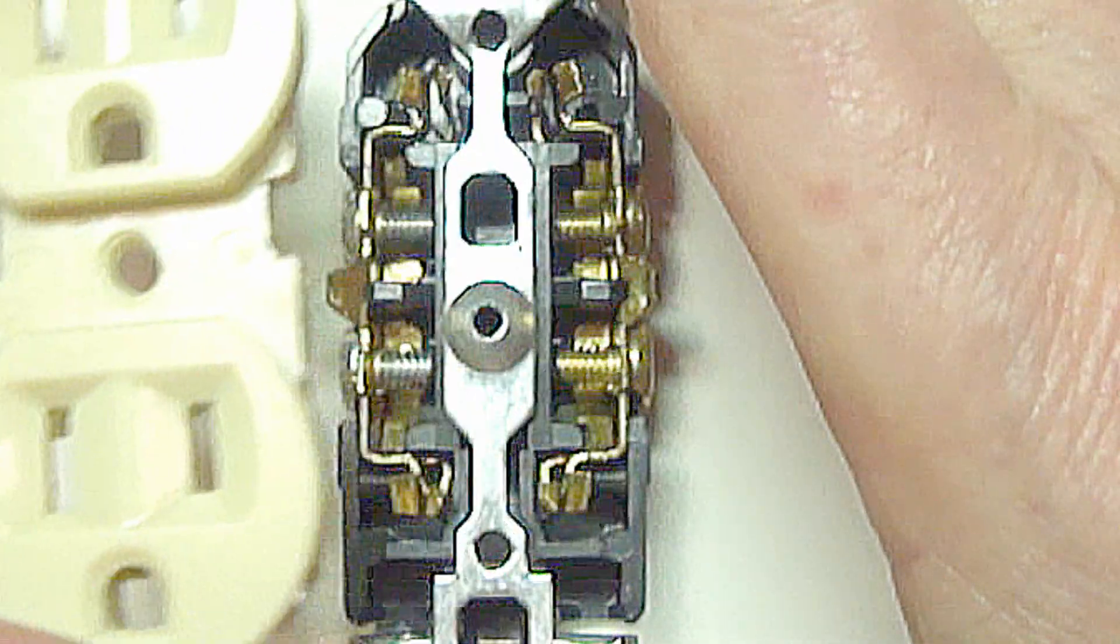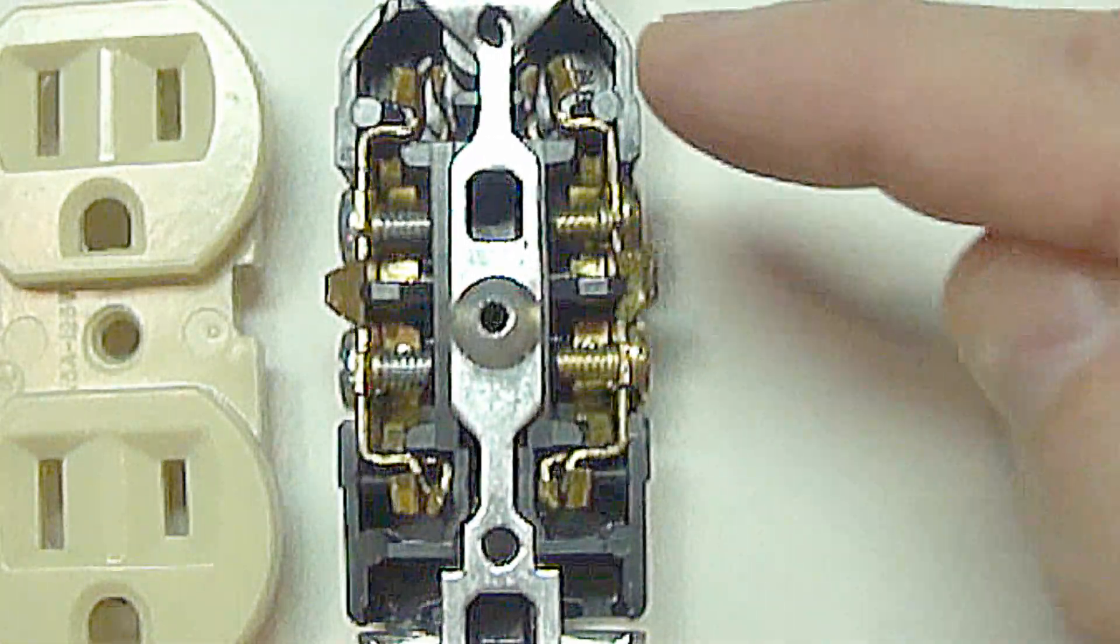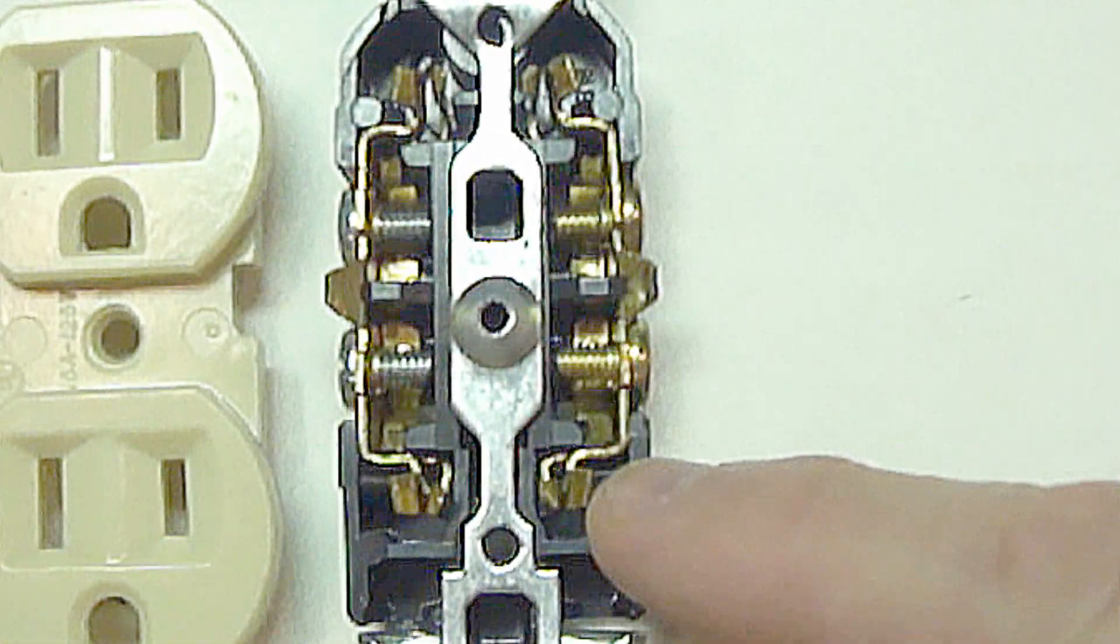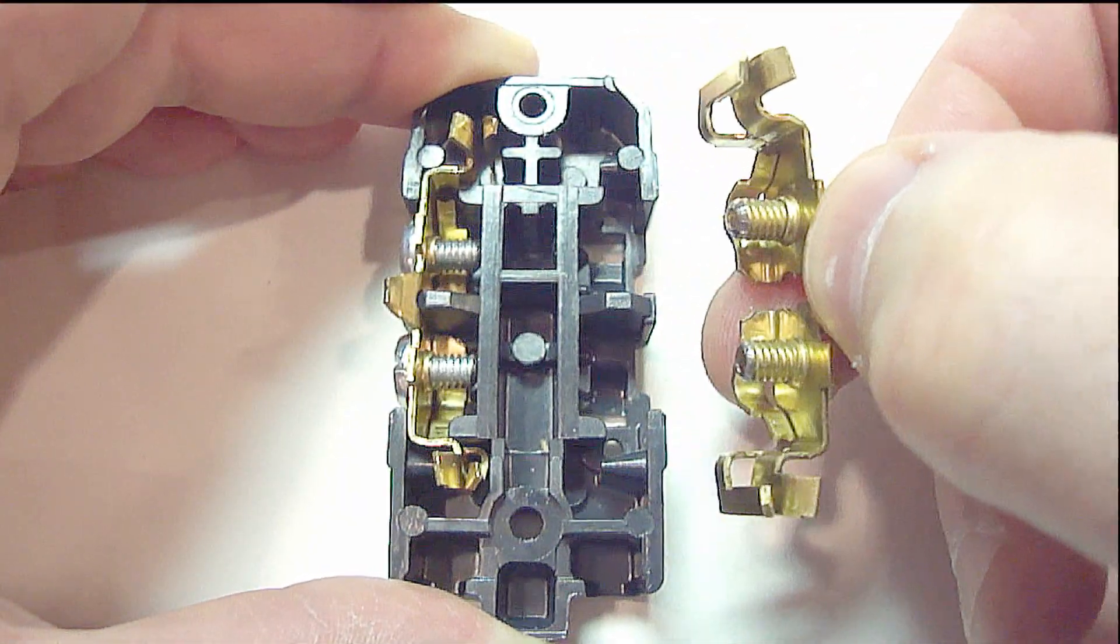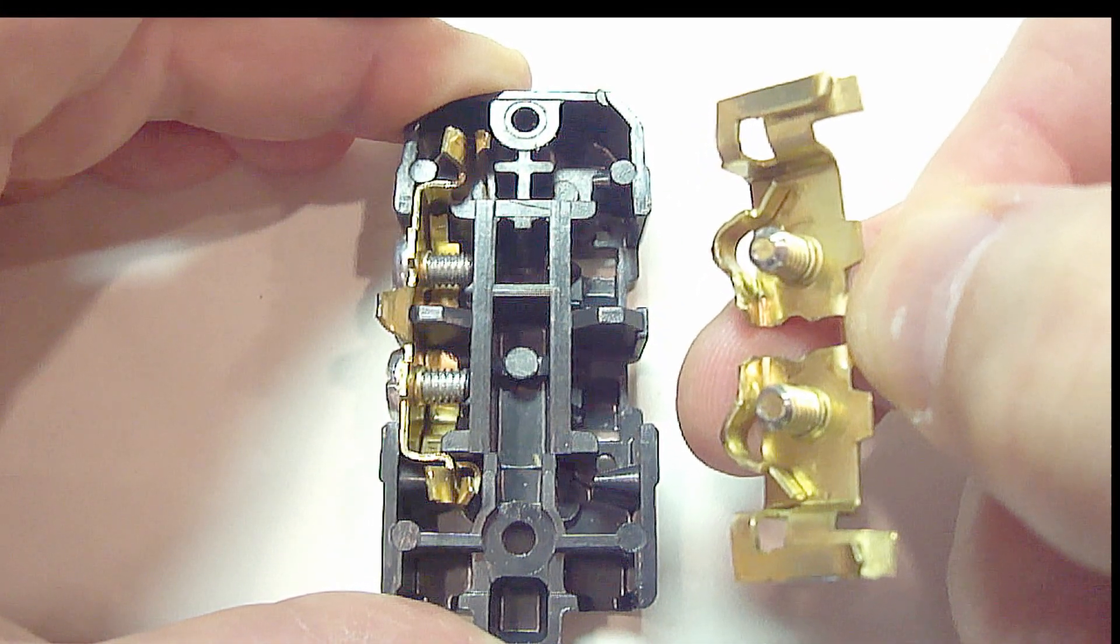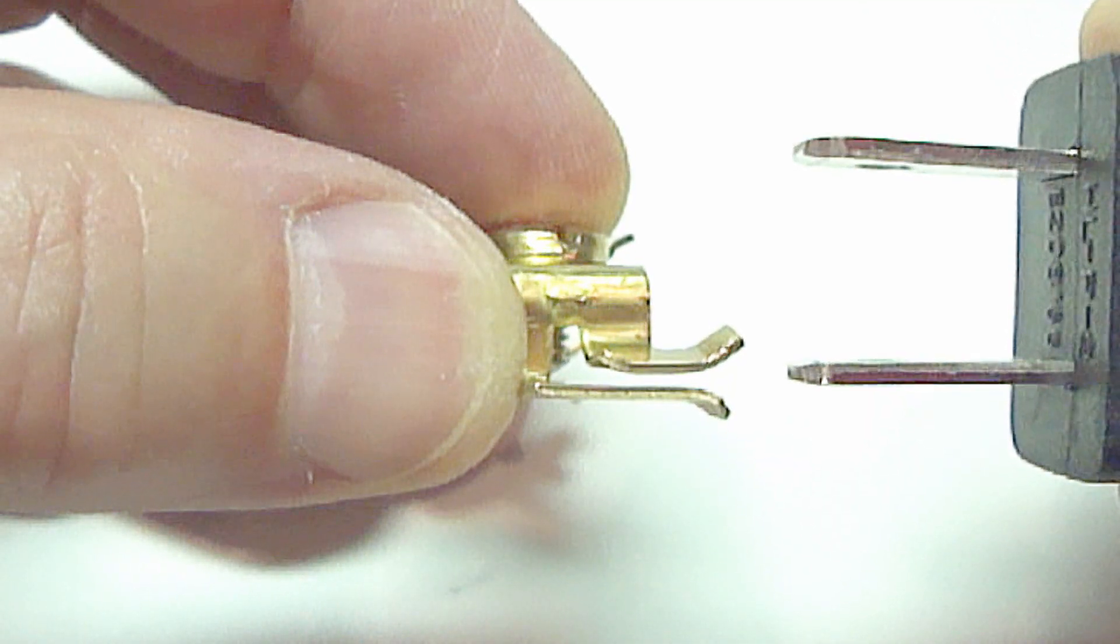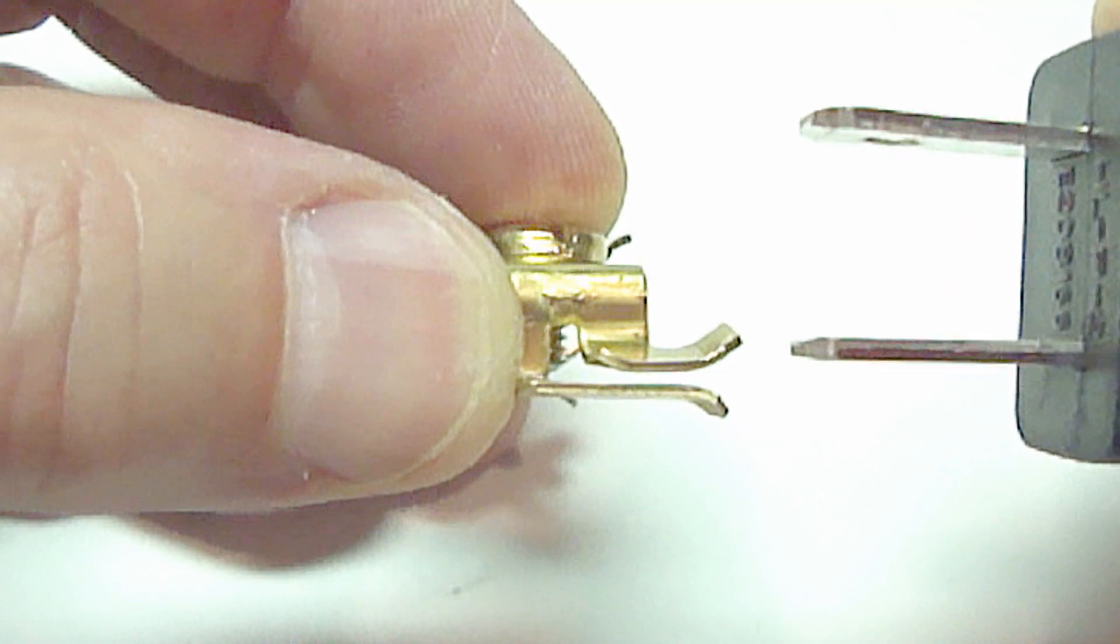By removing the face on the receptacle, you can now see the clamping system on both the top and the bottom. The clamping system can easily be removed. Next you'll see as I slide one of the prongs into one of the clamps that it closes down on the hole.